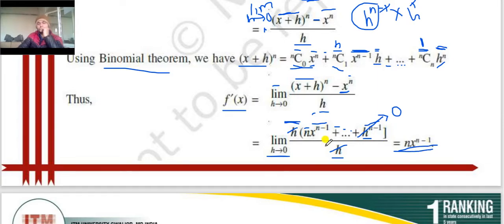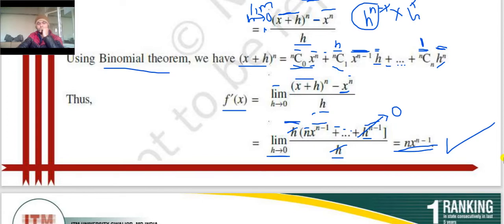We know the differentiation of x to the power n is n times x to the power n minus 1. This formula comes from the first principle of differentiation.